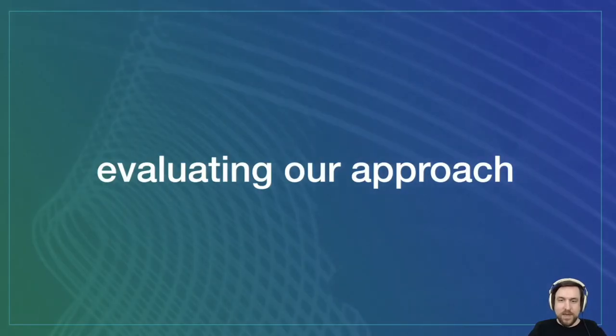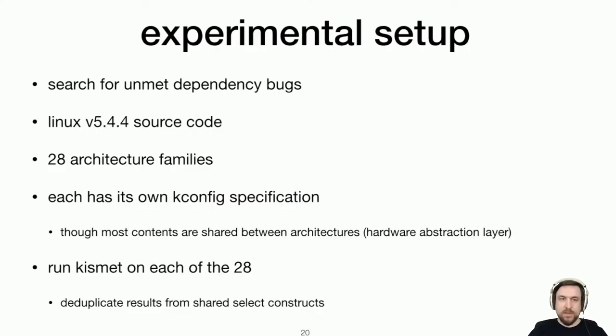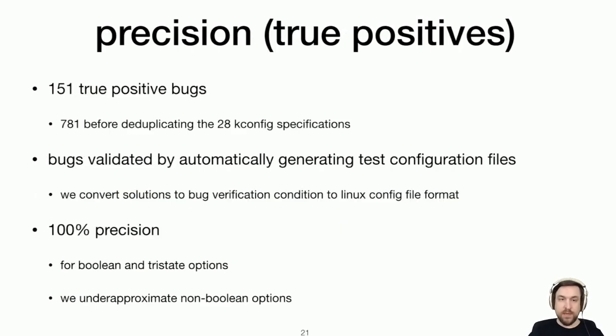Let's take a look at how we evaluated our tooling. So we took a somewhat recent version of the kernel. It's a little old at this point. Looked at all 28 architecture families because each actually has their own entry point to a kconfig specification, though most of the dependencies are actually shared between them. And then we ran our kismet bug finder on each of the individual 28 architectures kconfig specifications. And if we got duplicate alarms, we just deduplicated those.